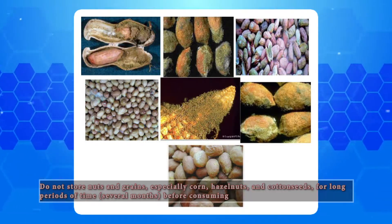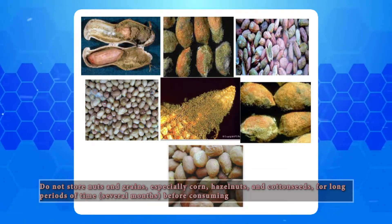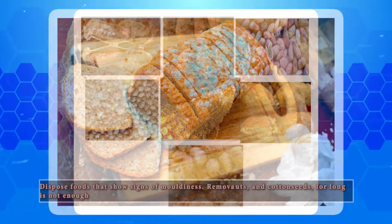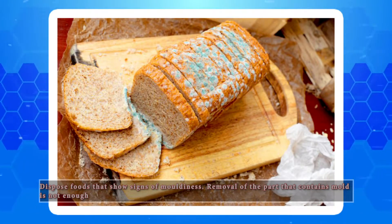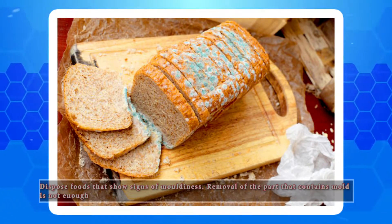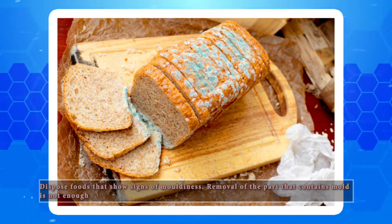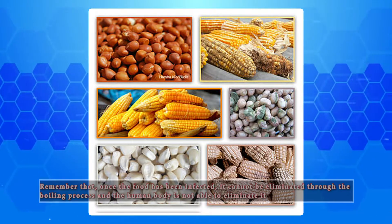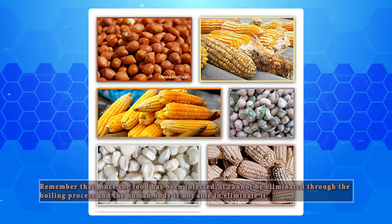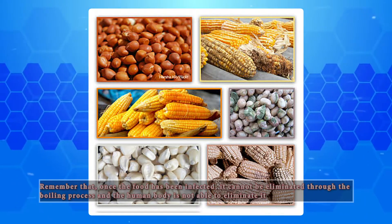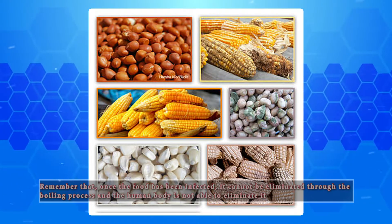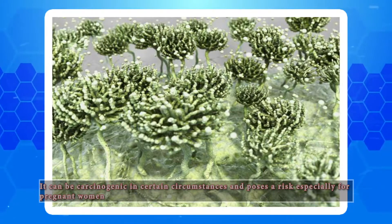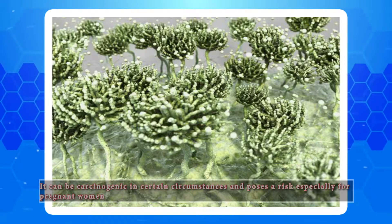Do not store nuts and grains, especially corn, hazelnuts, and pumpkin seeds for long periods of time before consuming. Dispose of foods that show signs of moldiness. Removal of the part that contains mold is not enough. Remember that once the food has been infected, it cannot be eliminated through the boiling process and the human body is not able to eliminate it. It can be carcinogenic in certain circumstances and poses a risk especially for pregnant women.